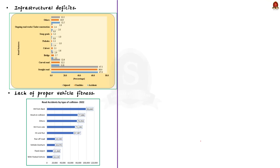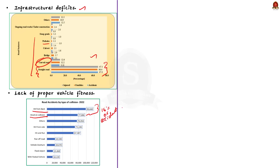The second reason is infrastructural deficits — pathetic conditions of roads and vehicles, poor visibility and poor road design. However, 67% of all accidents occurred on straight roads, over four times the total number on curved roads, roads with potholes and roads with steep gradients. The third reason is lack of proper vehicle fitness. Nearly 21% of collisions in 2022 were classified as hit from back, followed by head-on collisions accounting for 16% of total accidents.